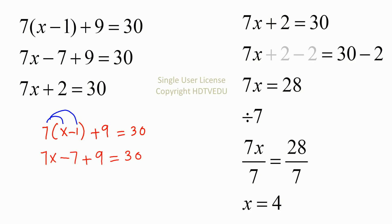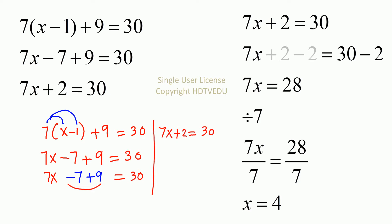Now be very careful. You should write this as 7x minus 7 plus 9 is equal to 30. What is negative 7 plus 9? Negative 7 plus 9 is positive 2. So we get 7x plus 2 is equal to 30. Subtract 2 from both sides and what do we get? 7x equals 28. Divide both sides by 7 and what do we get? 7x over 7 equals 28 over 7, or x is equal to 4.